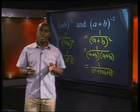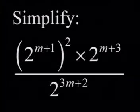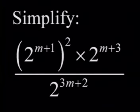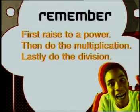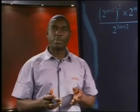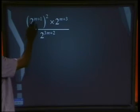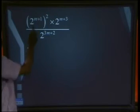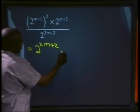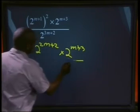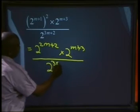Now you'll be ready for a challenge. Let's look at a problem that uses all our exponents knowledge so far. Simplify: 2 to the power of m plus 1, raised to the power of 2, multiplied by 2 to the power of m plus 3, all divided by 2 to the power of 3m plus 2. Remember the order: first, raise to a power; then do the multiplication, which means adding exponents; lastly, do the division, which means subtracting the exponents. Let's first examine the expression carefully. We have 2 to the power of m plus 1, raised to the power of 2. Doing that first gives us 2 to the power of 2m plus 2.